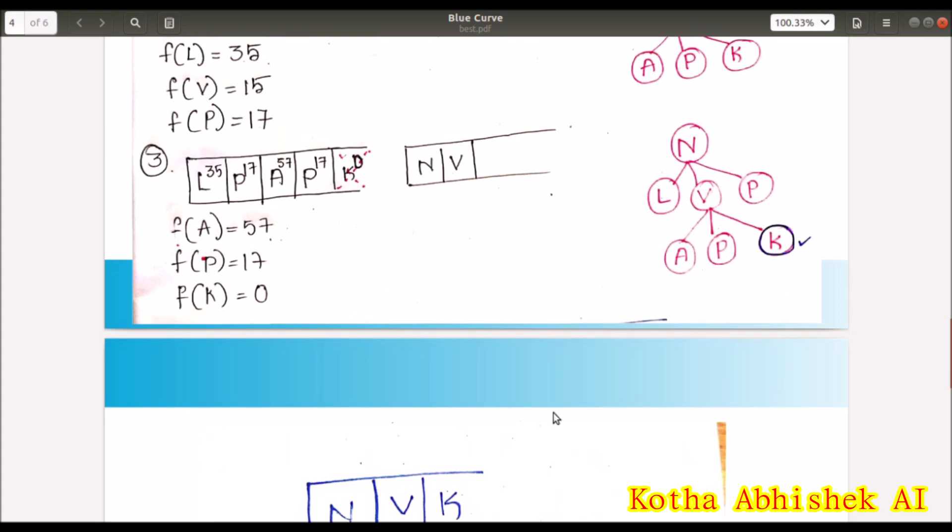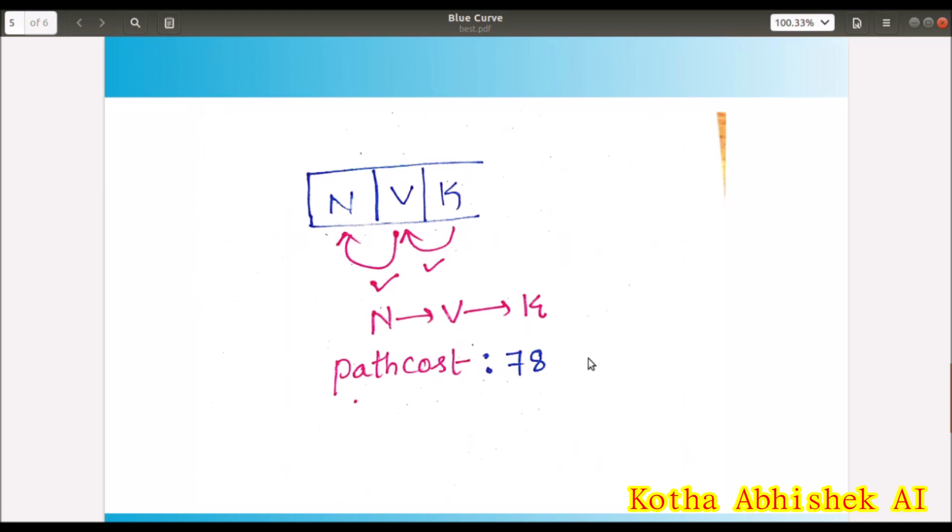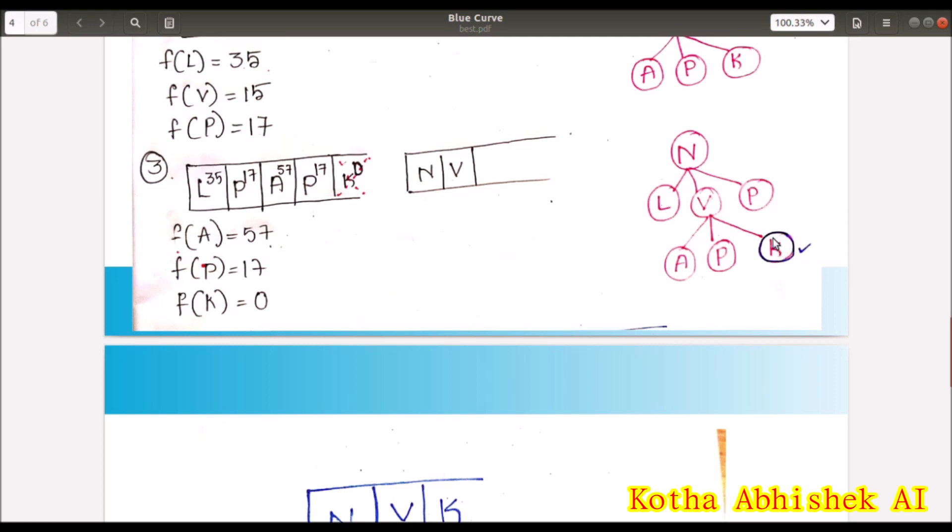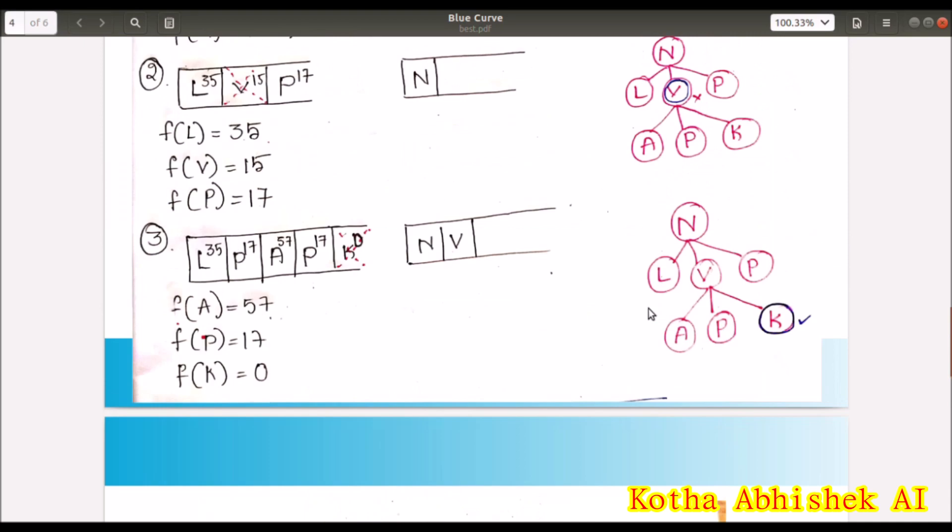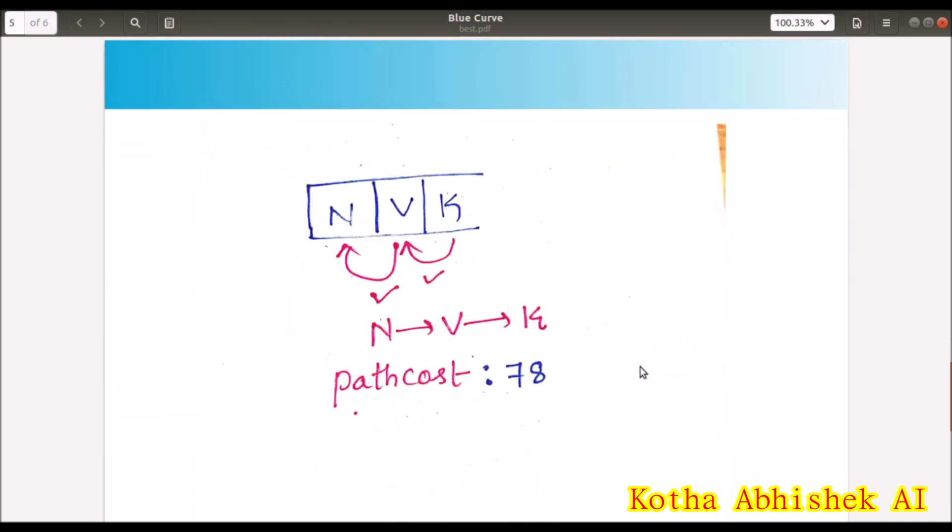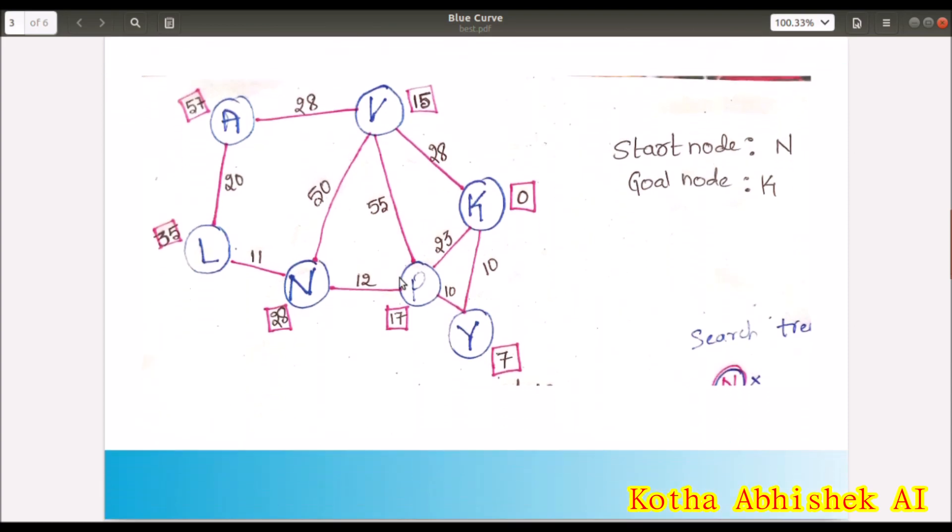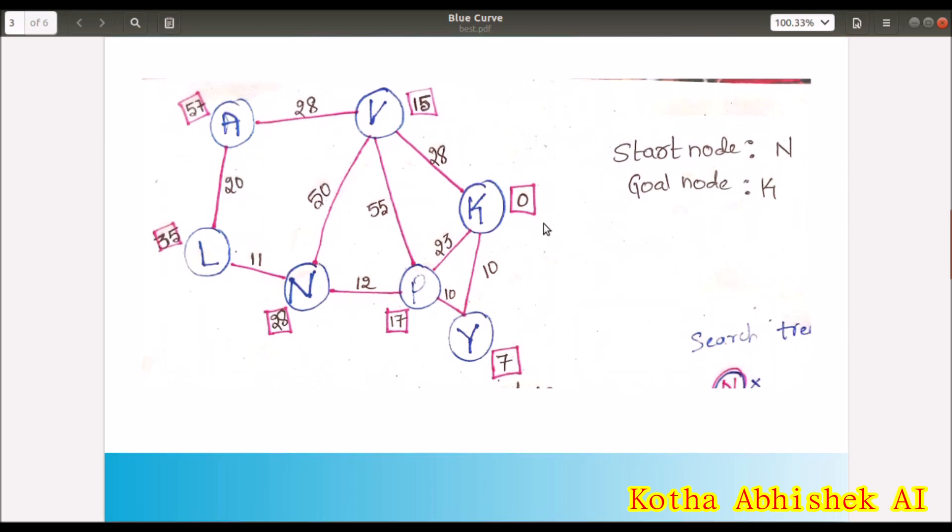Now we have three elements. That is N, V, K. So we will backtrack the solution. That is N is start node, K is goal node. We have to link them. That is K to V path. So our path exists. So our path is N to V, V to K. That is it.